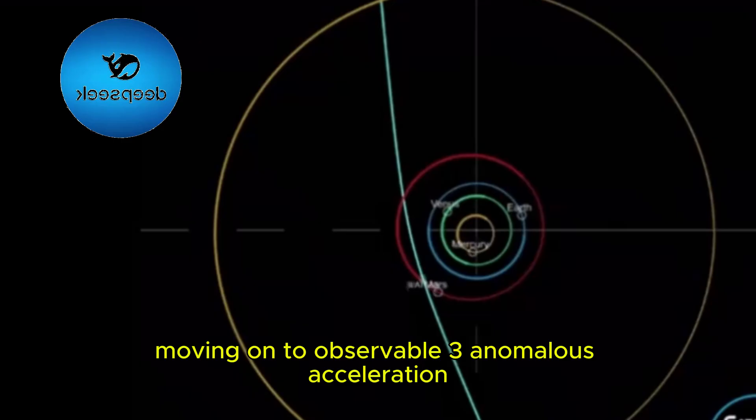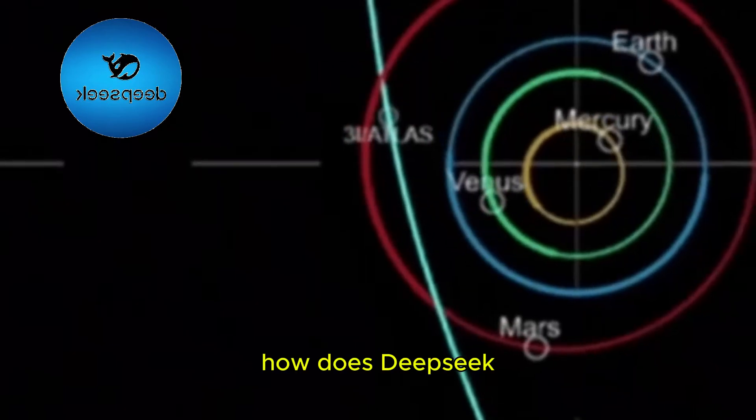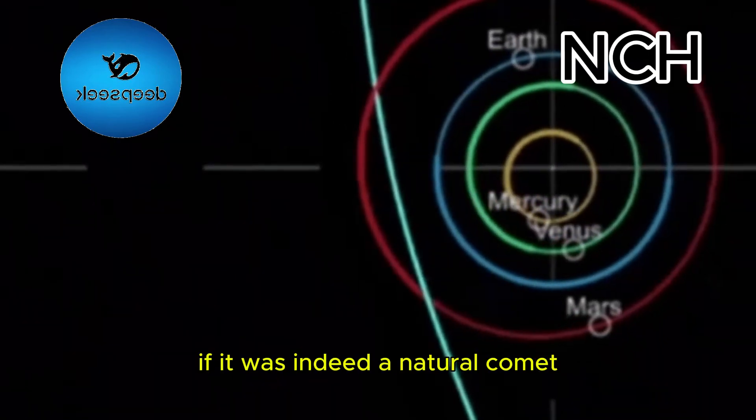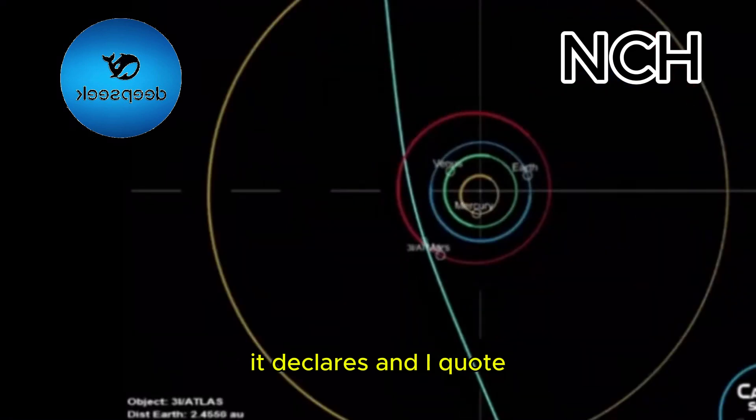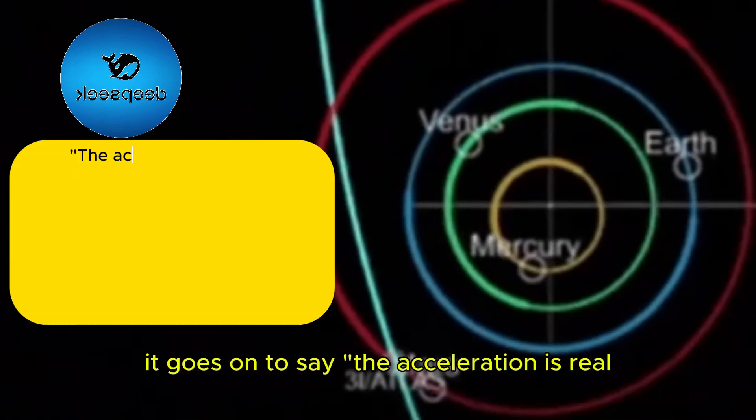Moving on to Observable 3: Anomalous Acceleration. How does DeepSeek grade the simplicity of this anomalous acceleration if it was indeed a natural comet? It declares, quote: extremely complex. It goes on to say, the acceleration is real.